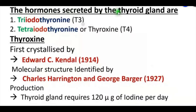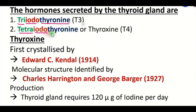Now let's see the hormones secreted by the thyroid gland. Two hormones are secreted: triiodothyronine and tetraiodothyronine or thyroxine. Triiodothyronine is also called T3 — tri means three. Tetraiodothyronine, also known as thyroxine, is called T4 — tetra means four.